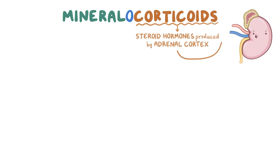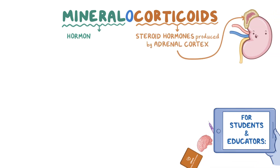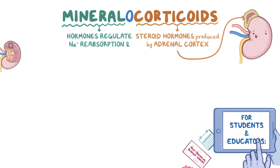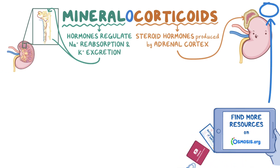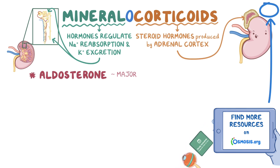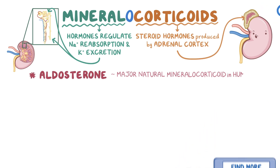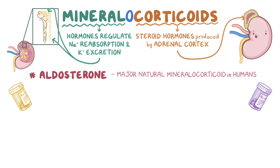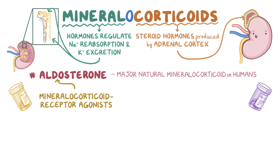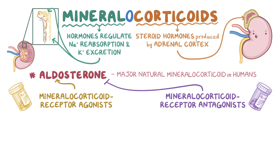Mineralocorticoids — 'corticoids' refers to the steroid hormones produced by the adrenal cortex, and 'mineral' refers to how these hormones regulate sodium reabsorption and potassium excretion in the distal convoluted and collecting tubules of the kidney. Aldosterone is the major natural mineralocorticoid in humans, and there are two major classes of medications targeting mineralocorticoids: mineralocorticoid receptor agonists, which mimic the role of aldosterone, and mineralocorticoid receptor antagonists that block the action of aldosterone.